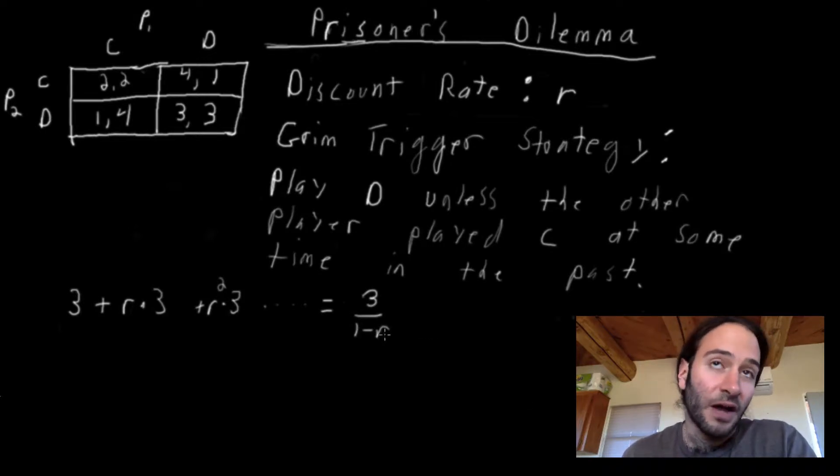This equals, please open a finance book if you haven't seen this before, check the references, three over one minus r. And let's say, for example, if r is 0.5, that means $100 tomorrow is the same as $50 to you today. If r is 0.5, then your total discounted sum rewards would be six. One minus 0.5 is 0.5. Three divided by 0.5 is six. So this is player one's payoff. We'll look at all of this from player one's perspective under grim trigger when player two is playing grim trigger.